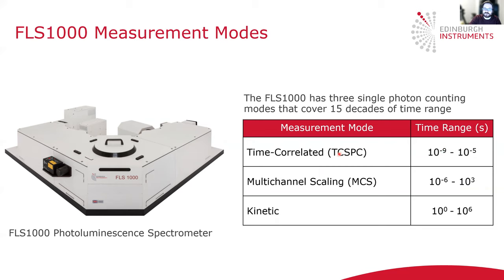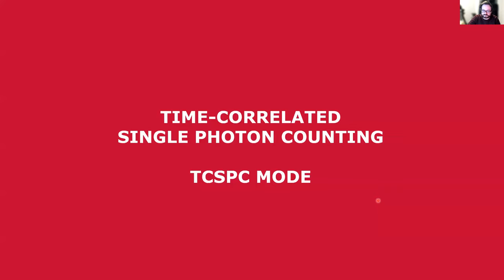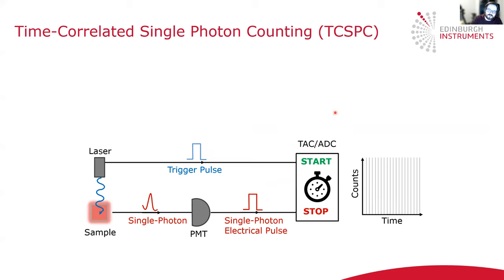The FLS1000 has three single photon counting modes that cover a full 15 decades of time range. For the fastest lifetimes, there's time-correlated single photon counting, or TCSPC for short. For intermediate timescales, we have multi-channel scaling mode, or MCS. And for the longest times, we have kinetic mode. I'm now going to explain each of these measurement modes in more detail and explain the types of photoluminescence transitions they're suitable for measuring and the advantages and disadvantages of each.